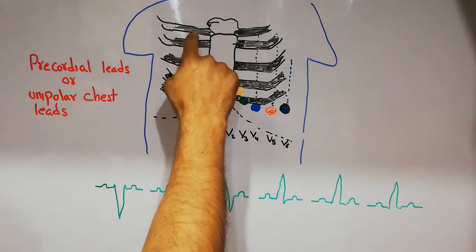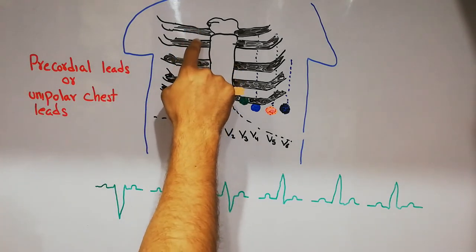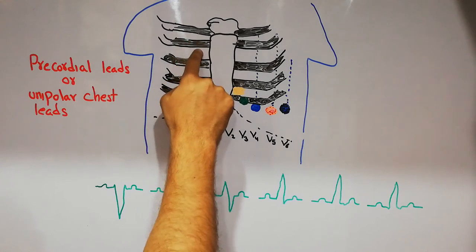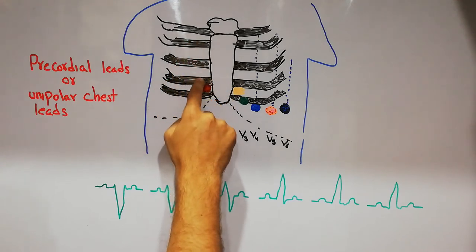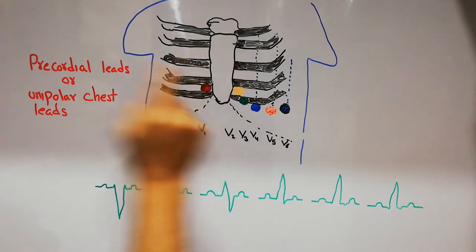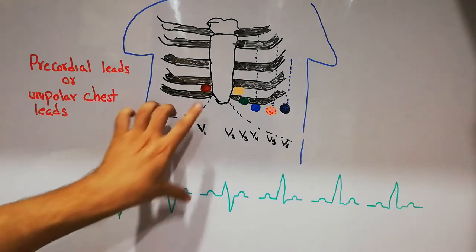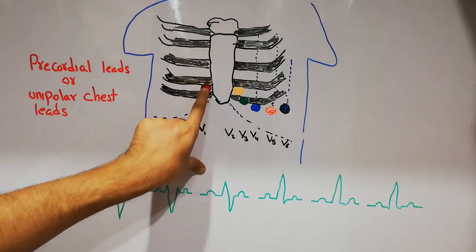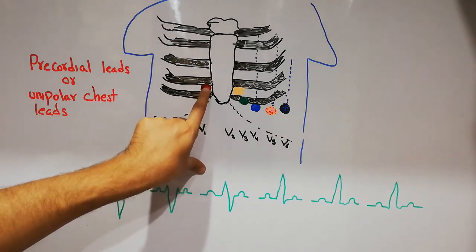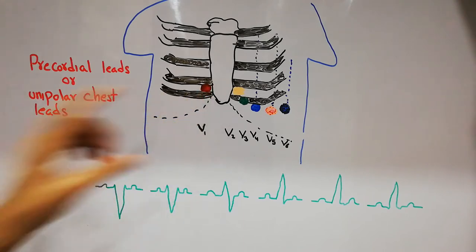To locate V1: here is the first rib, the first intercostal space, the second rib, the second intercostal space, the third rib, the third intercostal space, the fourth rib, and the fourth intercostal space. So the first chest lead, V1, is present in the fourth intercostal space on the right side of the sternum.